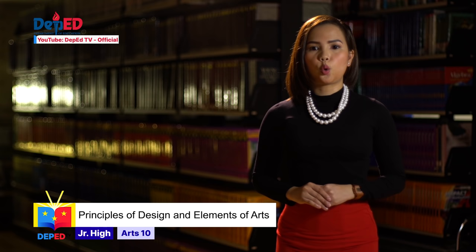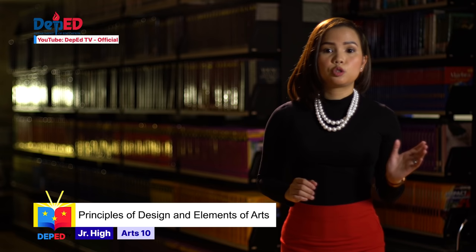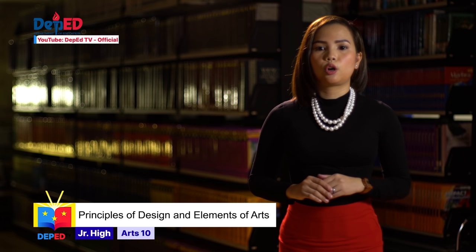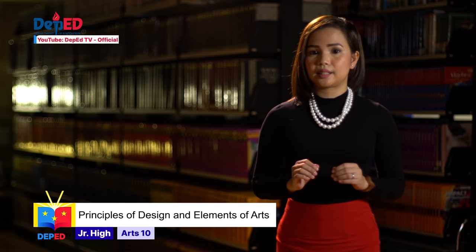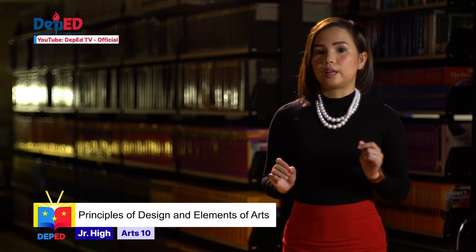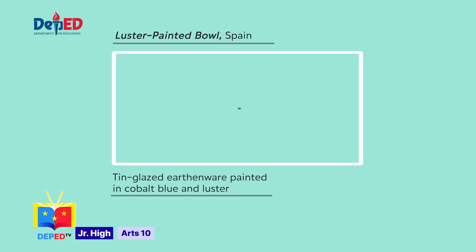Next one is contrast. The juxtaposition of strongly dissimilar elements is called contrast — dark set against light, large against small, bright colors against dull are examples of contrast. Visual experience becomes monotonous without contrast. Contrast can also be seen in the thick and thin areas of a single brush stroke, and this luster-painted bowl is a perfect example of that.